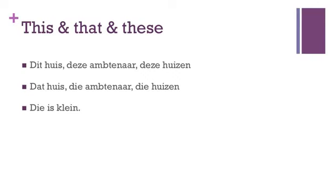For 'that' in front of a noun — indicating something a little further away — you use 'dat' for het nouns and 'die' for de nouns and the plural. These rules also apply if you leave the noun out. For example, if you want to say 'that servant is tiny' without the noun, in English it's 'that one is tiny,' but in Dutch it's 'die is klein' — you don't add 'one' or 'ambtenaar.'